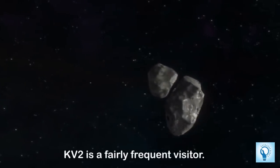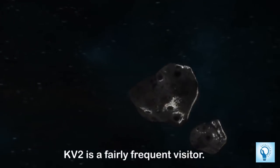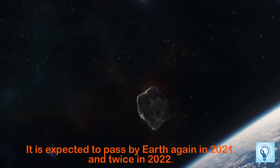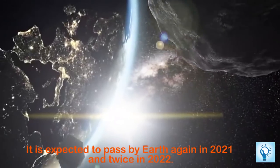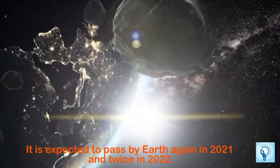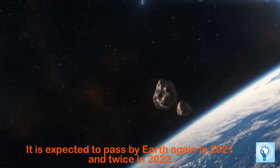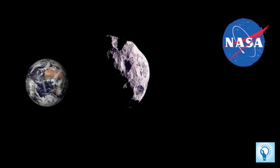Now the KV2 is a fairly frequent visitor for us. After today's trip it is expected to pass by the earth again in 2021, only two years from now, and twice again in 2022. And this is according to NASA.